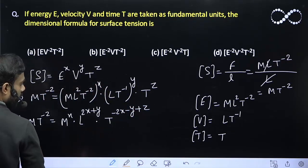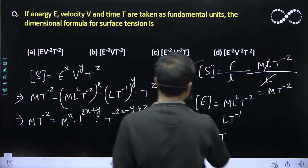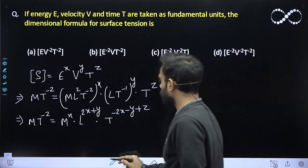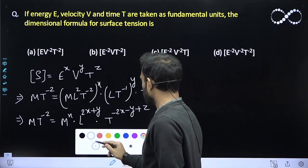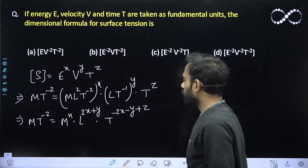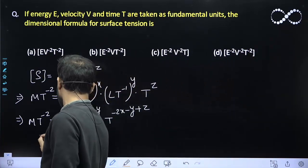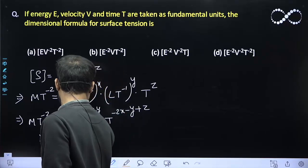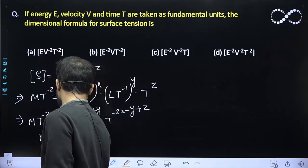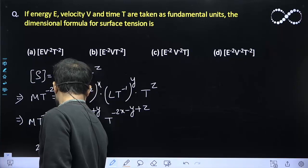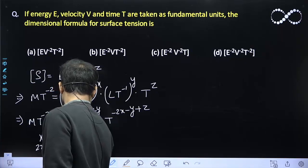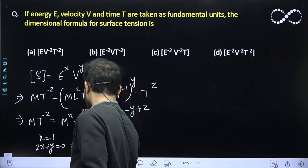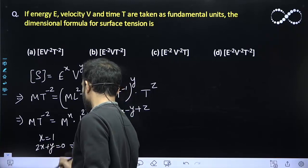By comparing LHS and RHS, I can say x is equal to 1. For L: L is having zero dimension on the left side, so 2x plus y equals 0. Since x equals 1, y must equal minus 2 — then only 2(1) + (−2) = 0.